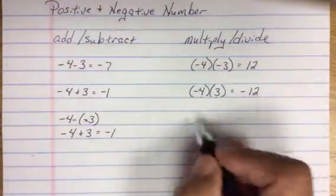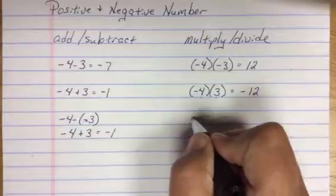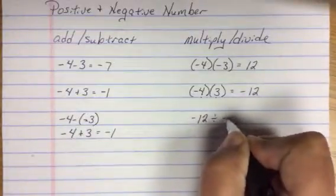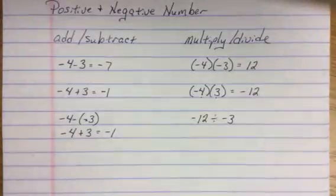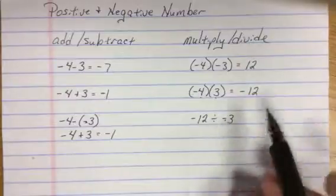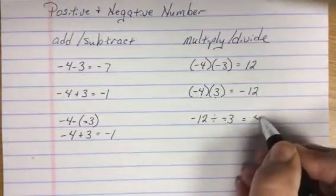The same goes for division. Negative 12 divided by negative 3. Signs are the same, so my answer is positive.